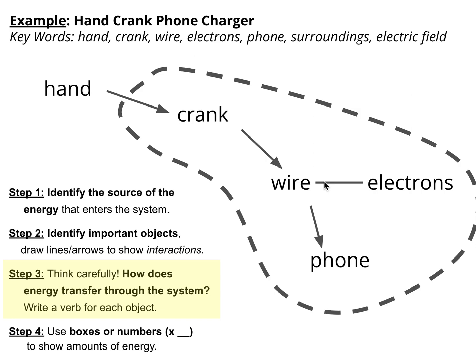Next, step 3. How does energy transfer through the system? Well, first of all, notice I have identified a system with this dotted line. And I've shown arrows to indicate the direction of energy transfer that I'm really certain about.